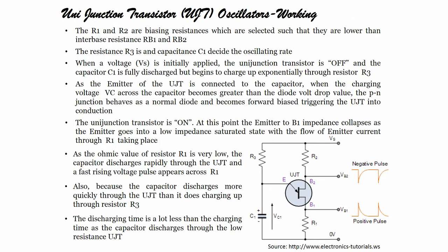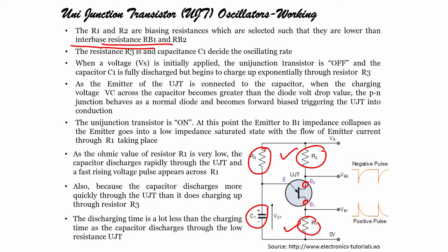Let us see how it works. Resistance R1 and R2 are biasing resistors which are selected such that they are lower than the interbase resistance. The resistance R3 and capacitance C1 decide the oscillating rate — this R and C will decide the oscillating rate.